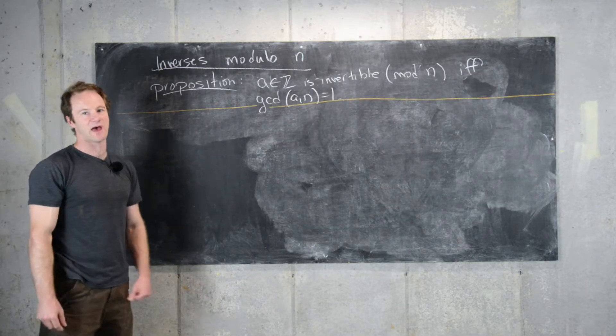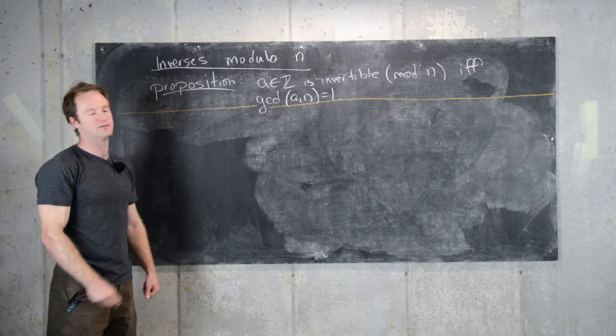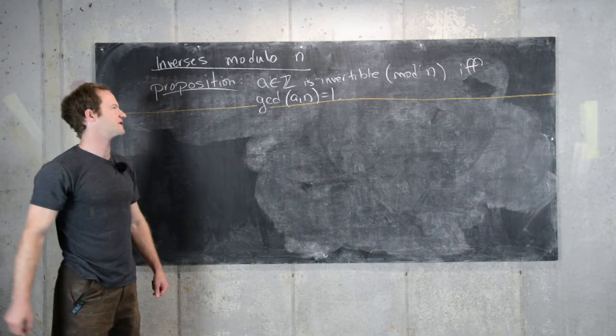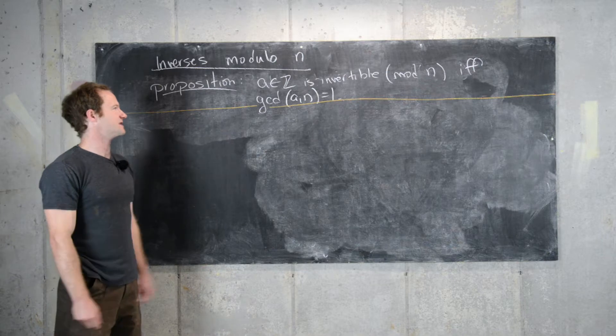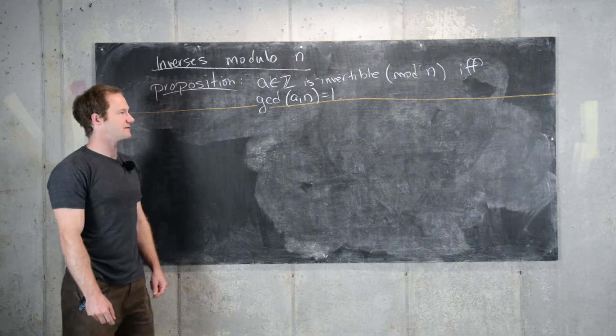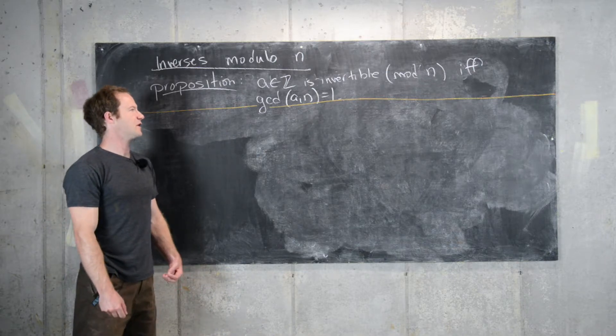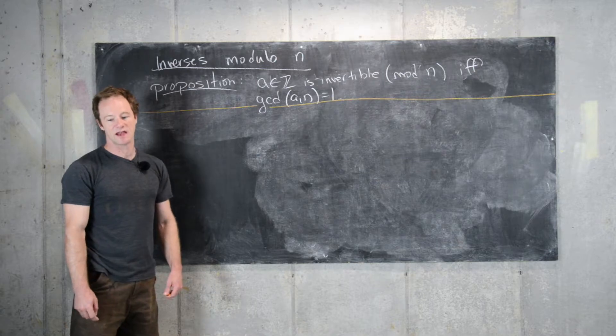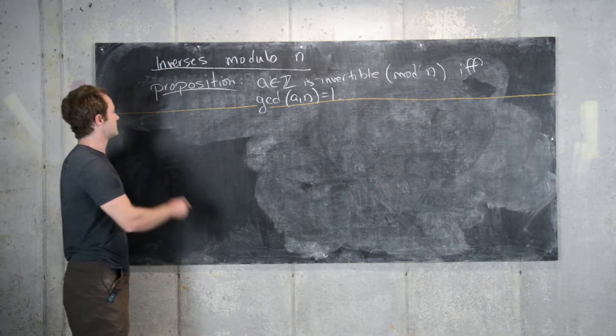So previously we gained some evidence to say that this statement should be true. So now we'll go ahead and prove this statement. So the statement is an integer a is invertible modulo n if and only if the GCD of a and n equals 1. So let's look at the proof.